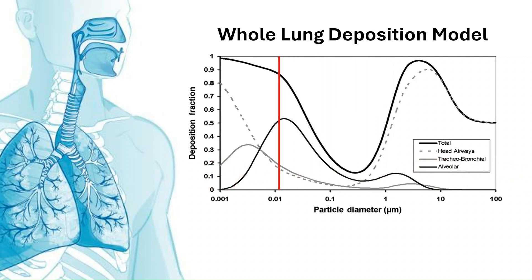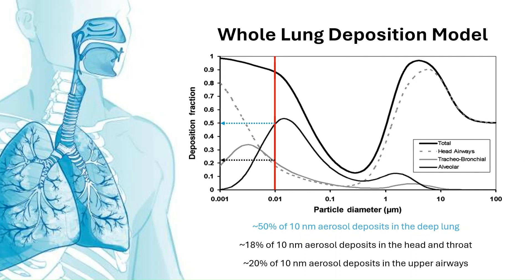Likewise, for the smallest aerosol, let's say 10 nanometers in size, the majority of this aerosol is deposited in the alveolar region, or the deepest region of the lungs, but not all of it. Almost 40% of the smallest aerosol is deposited in the upper airways.